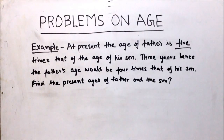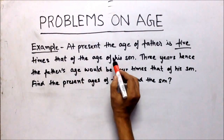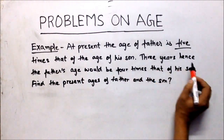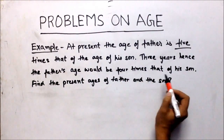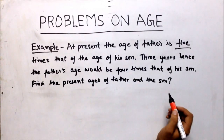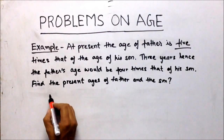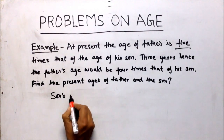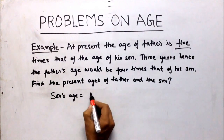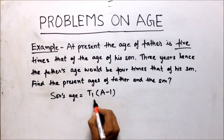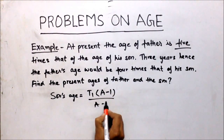Now we start with an example based on the previous formula. At present, the age of the father is 5 times that of the age of his son. 3 years hence, the father's age would be 4 times that of his son. Find the present age of father and son. Recall the formula: son's age equals T1 times (A minus 1) upon (A minus B).